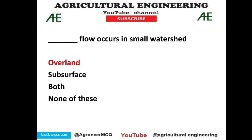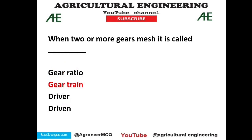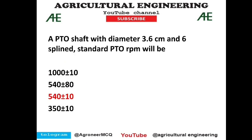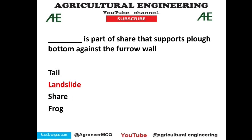Overland flow occurs in small watersheds — it is the flow over the surface not in streams, so option 1 is correct. When two or more gears mesh together it is called a gear train. A PTO shaft with diameter 3.6 cm and six-spline: the question is about standard PTO RPM. The unnecessary data of diameter and spline is given but you don't need it — the standard RPM of PTO is 540 ± 10, so option C is correct.